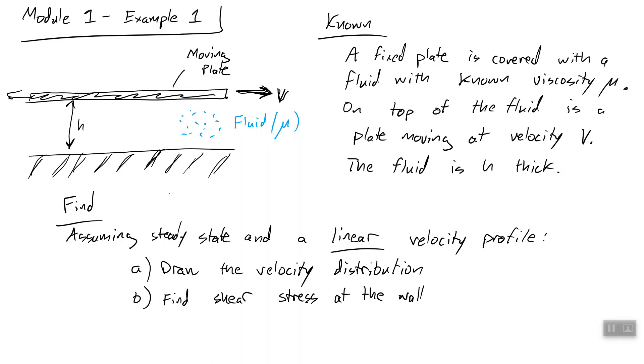So what we want to find is first assuming steady state, so that means no changing with time. In other words, our fluid is not accelerating. It is going at a constant velocity. And then assuming a linear velocity profile, we will get into what that means here in a second. First, A, draw the velocity distribution, and B, find the shear stress at the wall.